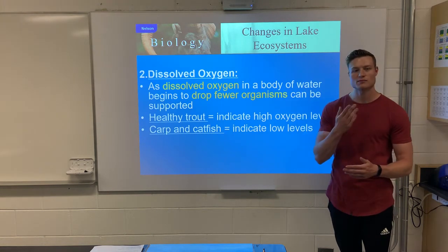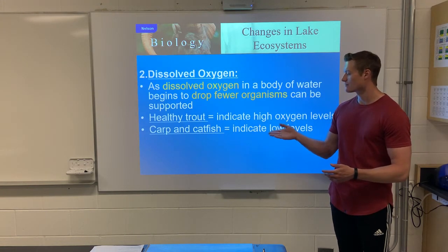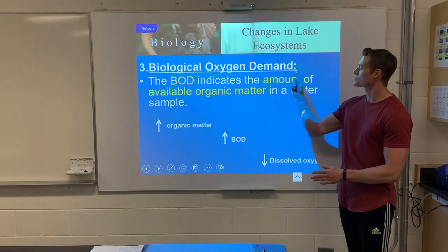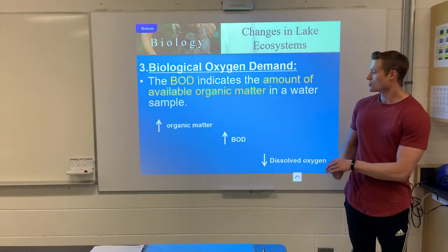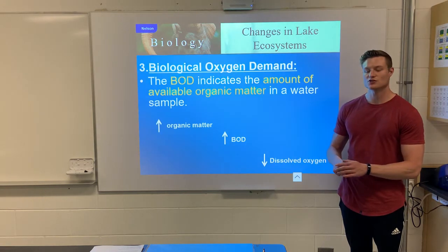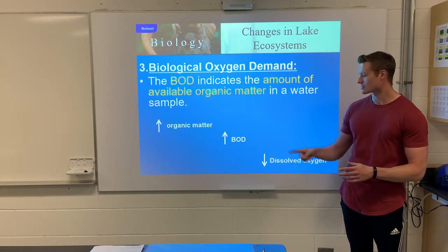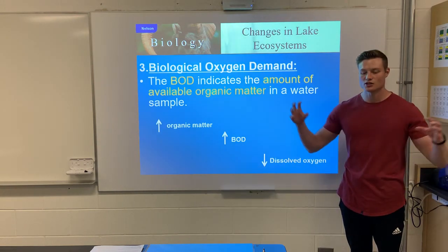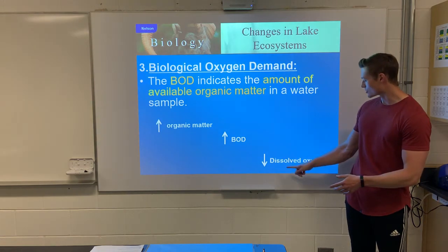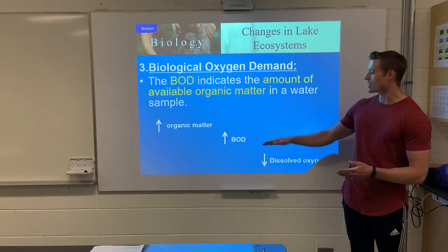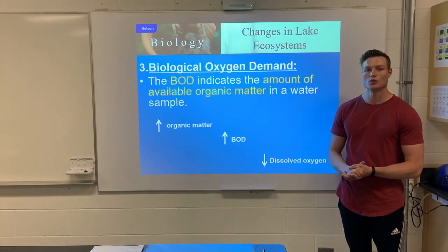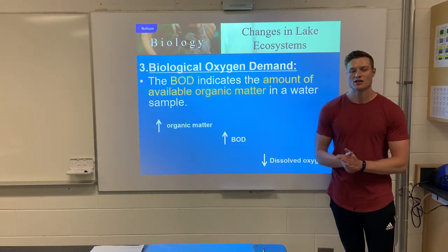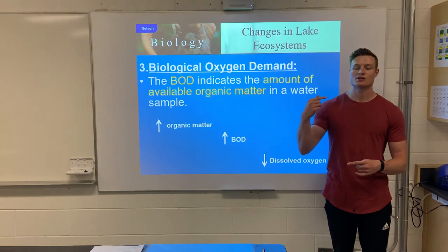Even without testing dissolved oxygen directly, you can look at indicator species. Healthy trout generally means good oxygen levels. More carp and catfish tend to indicate lower dissolved oxygen. Finally, you can test for BOD — biological oxygen demand. As organic matter increases, BOD increases because decomposers need more oxygen to break it down, which lowers dissolved oxygen. So a higher BOD relates to lower dissolved oxygen, and a lower BOD relates to higher dissolved oxygen.